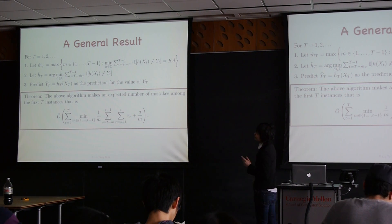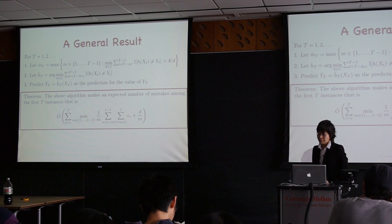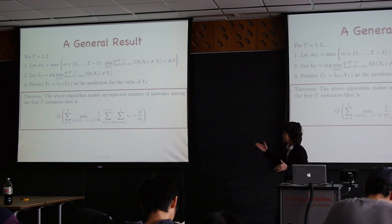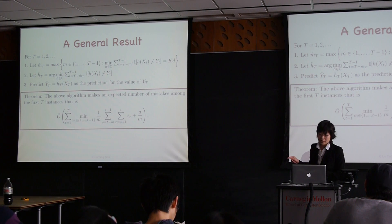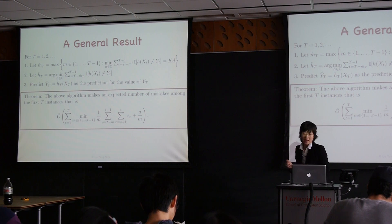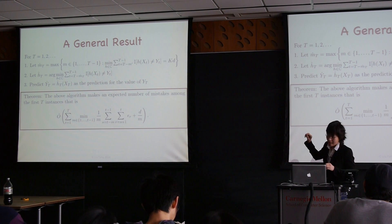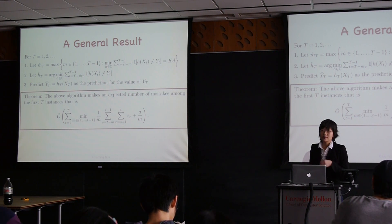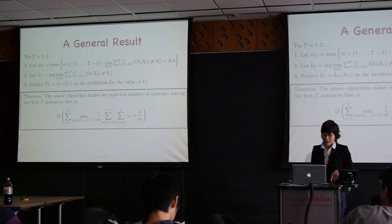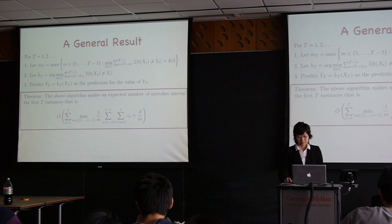We can then prove a theorem: this algorithm makes an expected number of mistakes among the first T instances bounded by a quantity that minimizes a trade-off between two terms. The first term is a sum of epsilon values representing the average distance between today's target and the past m target concepts. The second term represents the usual generalization error bound from statistical learning theory, bounding the difference between the empirical error rate of the empirical risk minimizer and its true error rate.